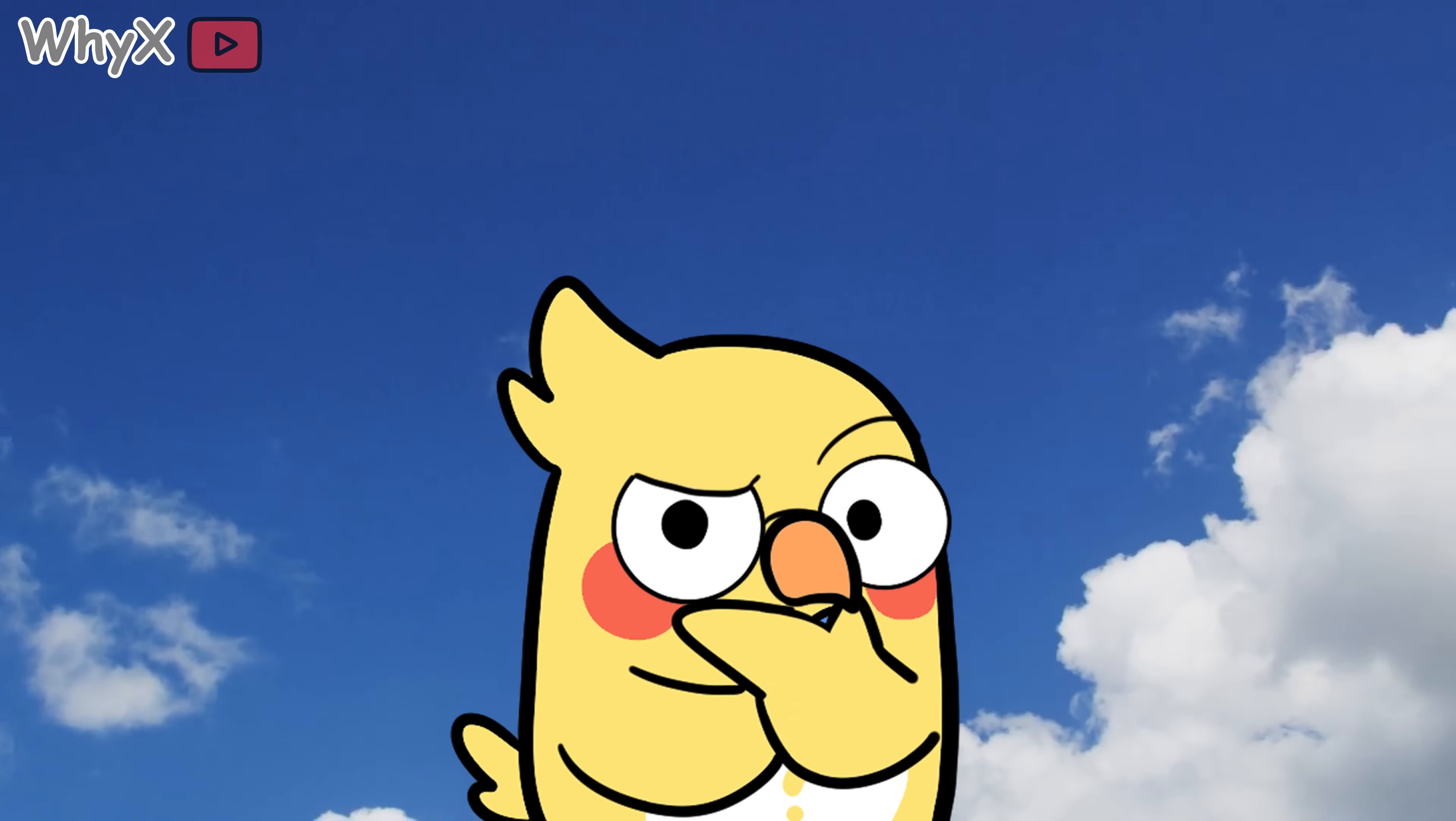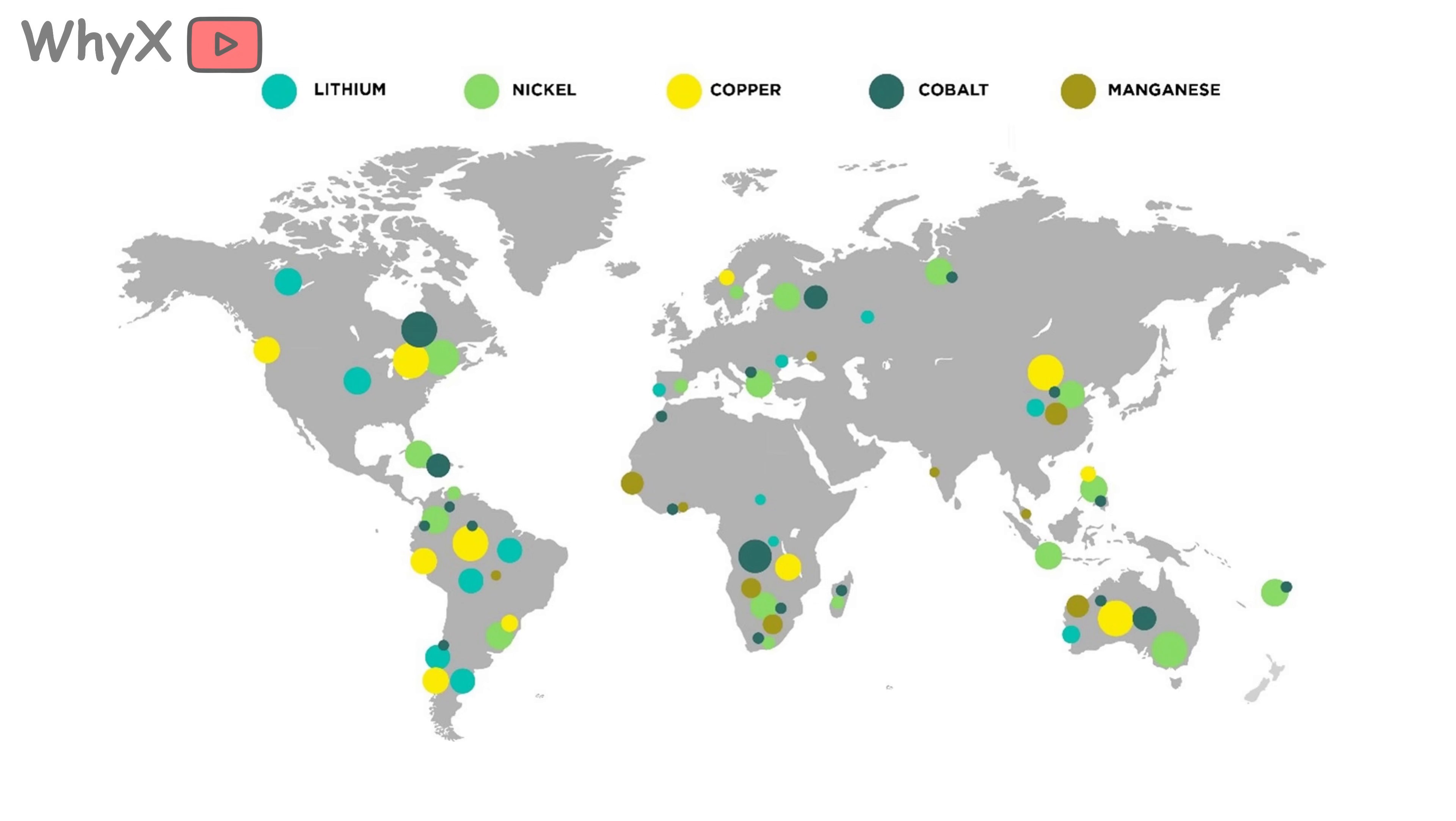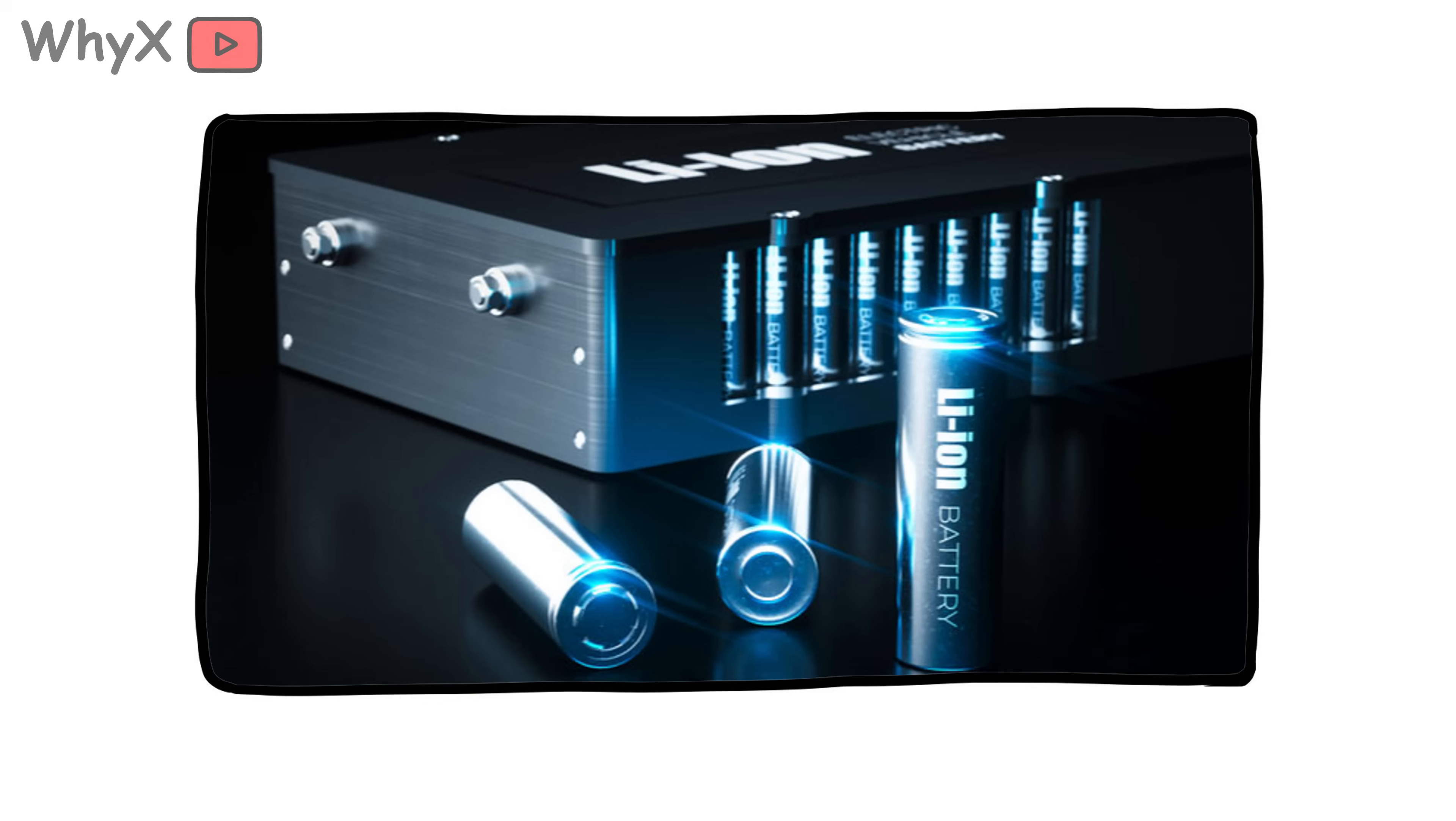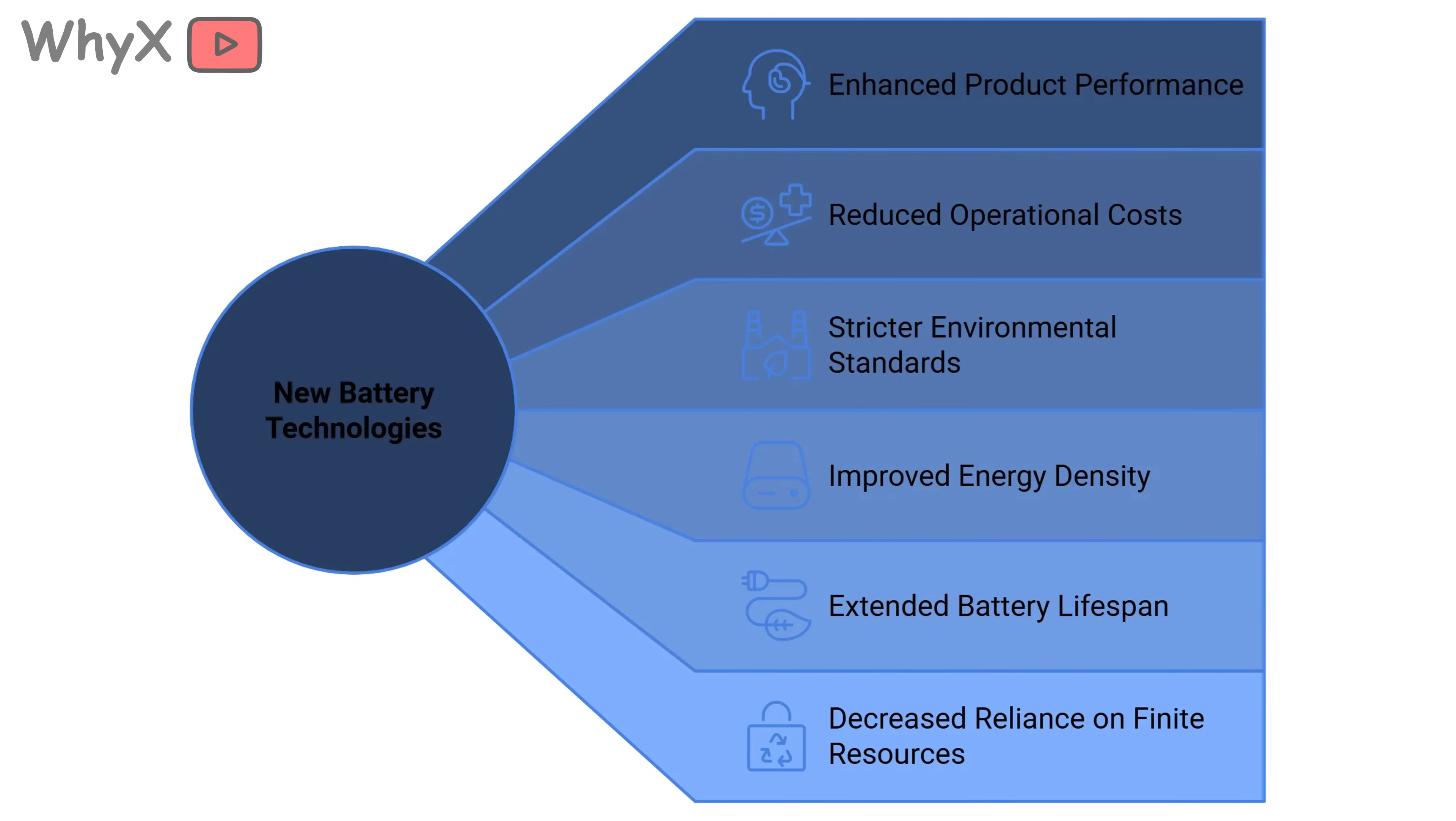So what is the path forward? A few key moves. Diversify where we get our metals so no single country can hold us hostage. Invest heavily in recycling so we can reuse what we have already mined. Support the development of new battery technologies that rely on more common materials. And manage the transition responsibly, so we do not solve one environmental problem by creating another.